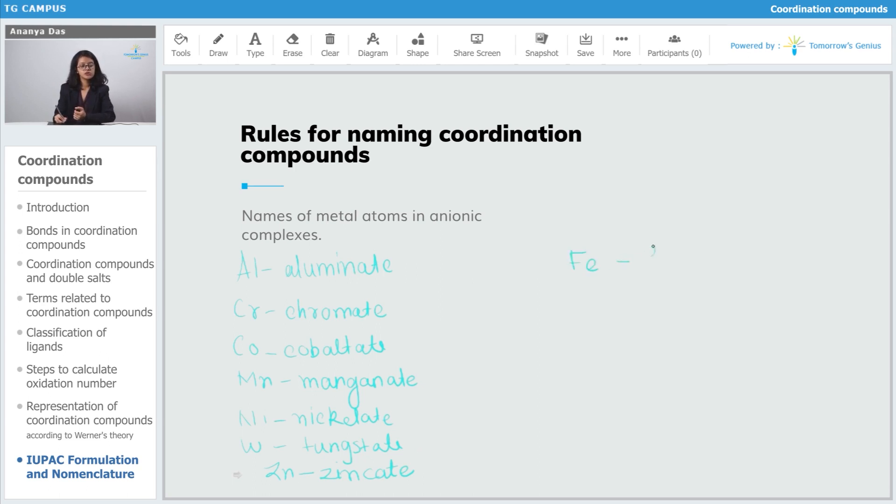Iron is known as or written as ferrate. If it's present in an anionic complex, it will be written as ferrate. Ag, that is silver, will be written as argentate.